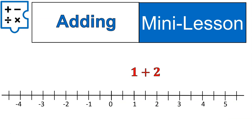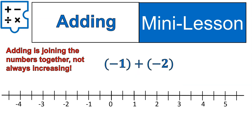First off, let's start with an example that should be pretty familiar: one plus two. The way that we would show this on a number line is that we would start at the number one, and then we would move two spaces to the right. When we are increasing or adding a positive number, we move to the right. So we would have one plus two, which gives us three.